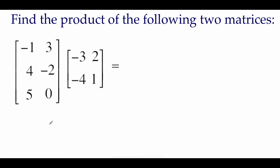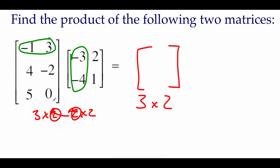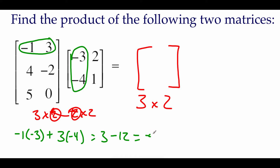Here we've got a couple of matrices to multiply together. The first one has three rows and two columns, the second one is two by two. Those middle numbers match up, so our new matrix will be three by two. Doing row by column multiplication: grab the first row from the first matrix and the first column from the second matrix. We take negative one times negative three, then add three times negative four. Negative one times negative three is three, and three times negative four is negative twelve, so we get negative nine. That goes in position first row, first column.